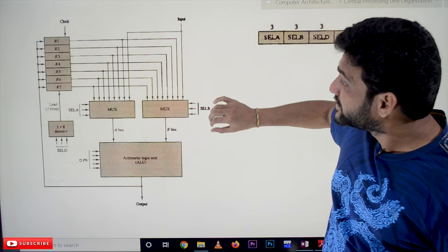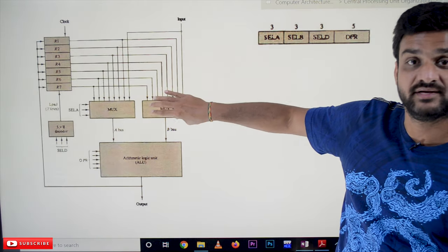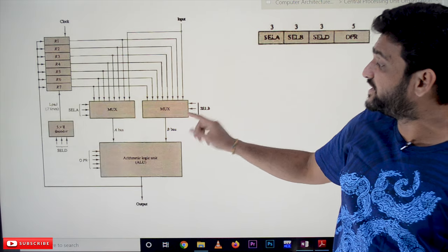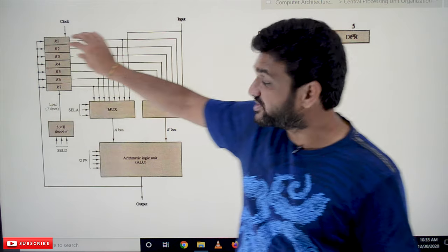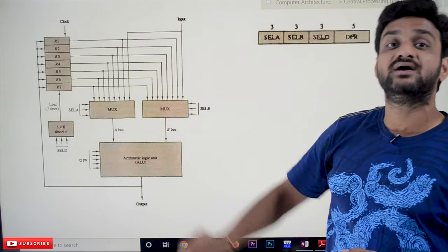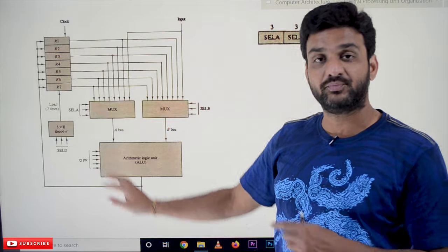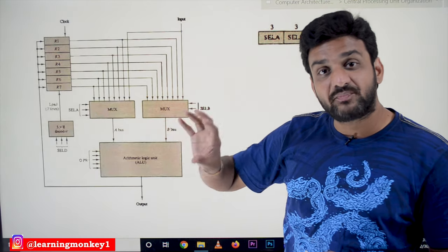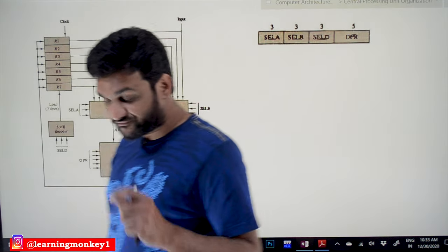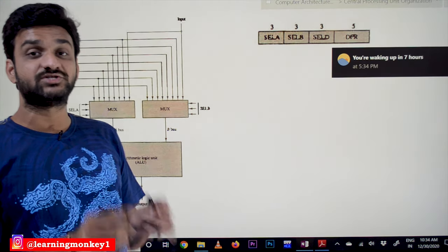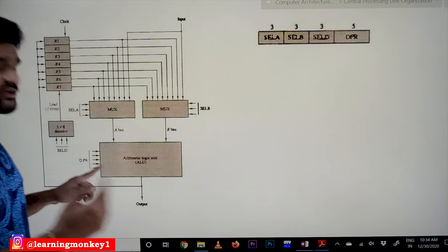By using the select lines of multiplexer A and multiplexer B, we select one of the registers and the data transfers onto the arithmetic logic unit. Similarly, using select line B, the content of the selected register transfers through multiplexer B onto the ALU. The OPR lines are operation select lines — with five select lines we can perform 32 different types of operations on this computer.